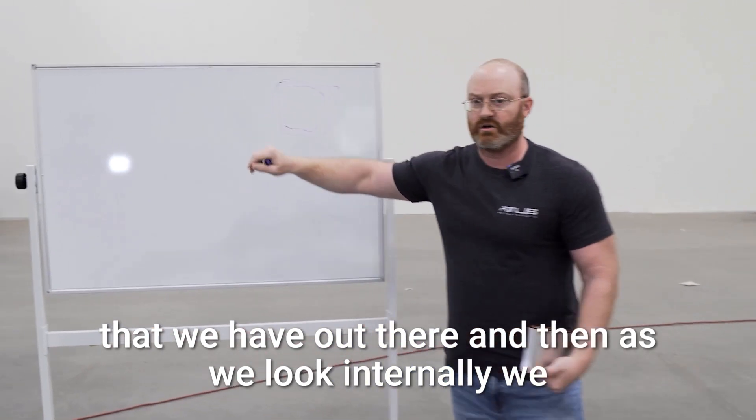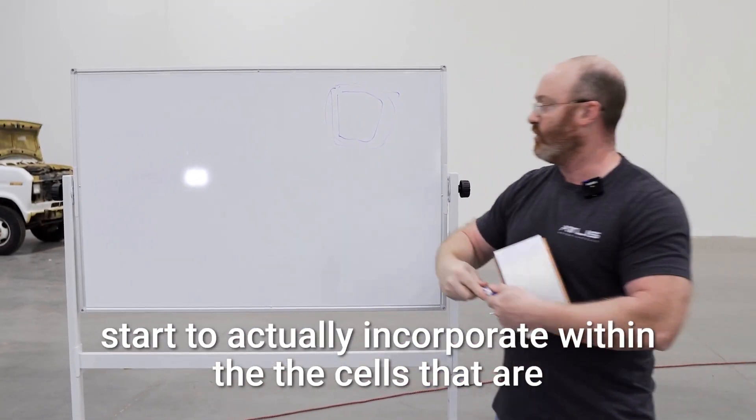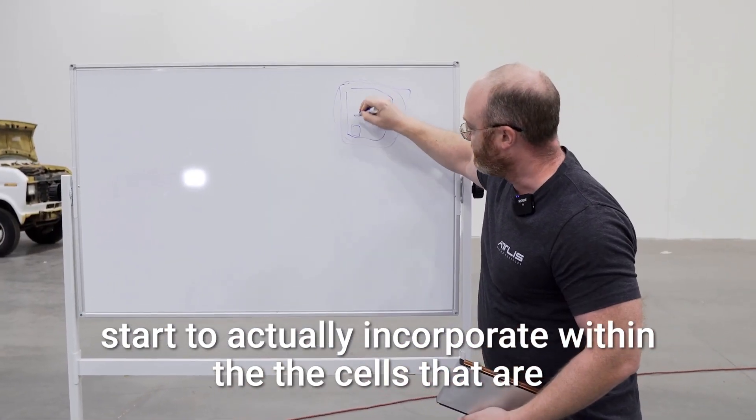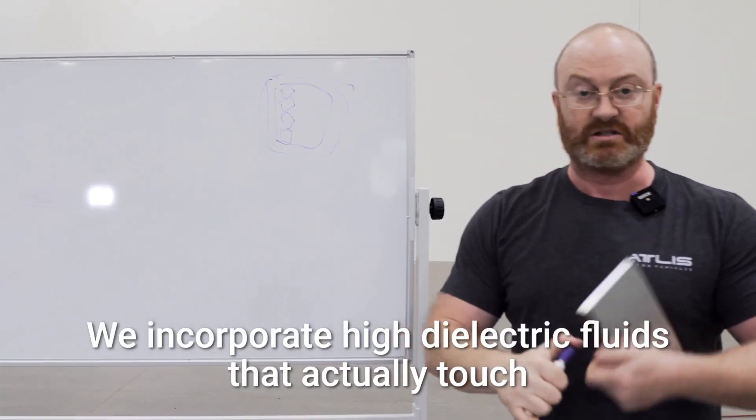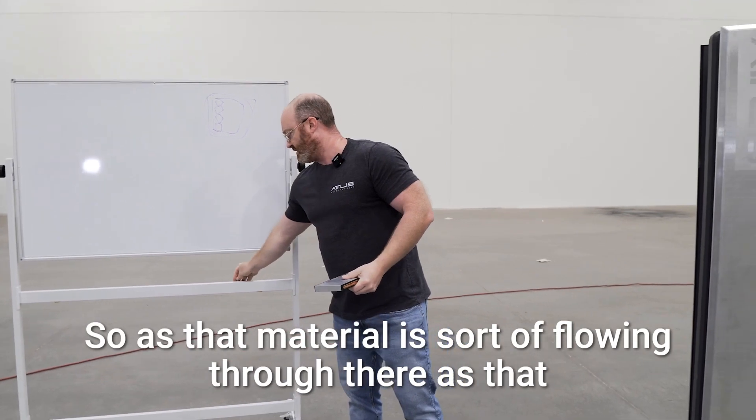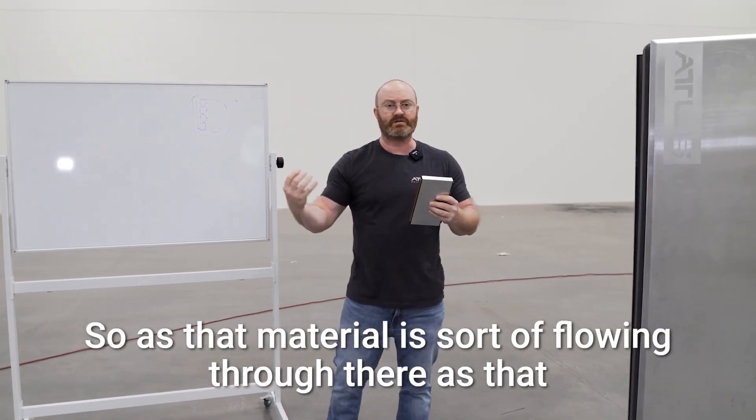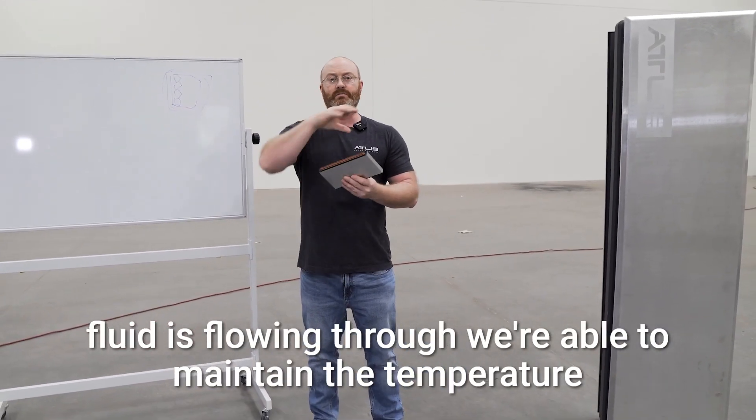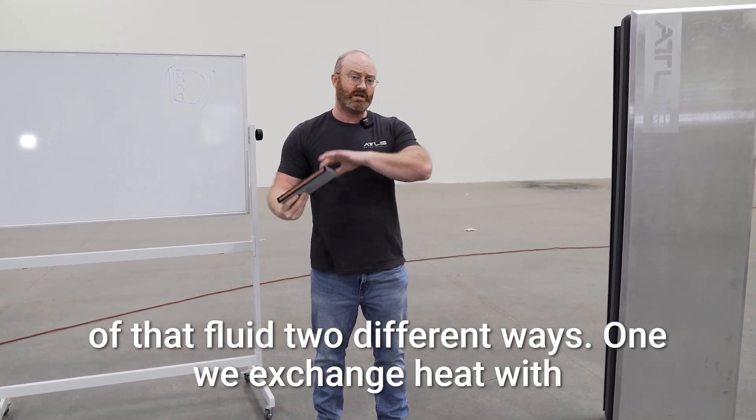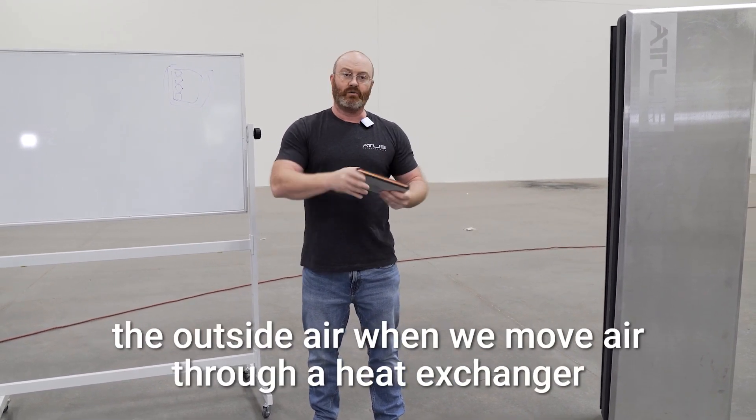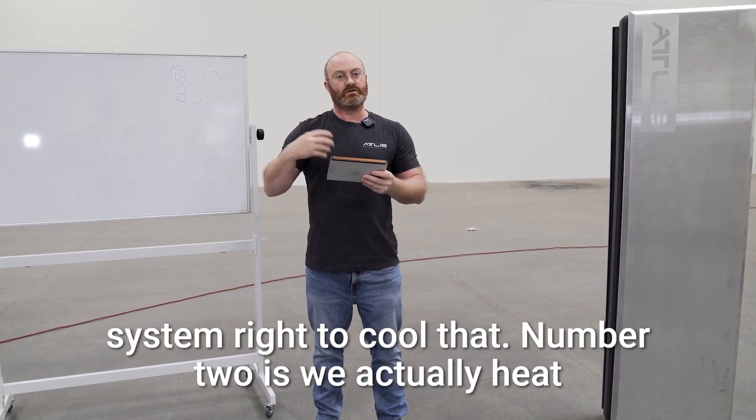And then as we look internally, we start to actually incorporate, within the cells that are sitting inside there, high dielectric fluids that actually touch the cells themselves. As that material is flowing through there, as that fluid is flowing through, we're able to maintain the temperature of that fluid two different ways. One, we exchange heat with the outside air and we move air through a heat exchanger system to cool that.